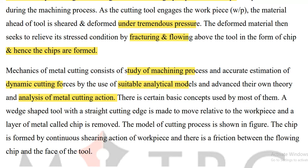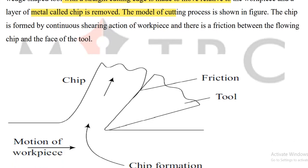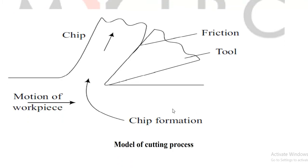A tool with a straight cutting edge is made to move relative to the workpiece, and a layer of metal called a chip is removed. The model of the cutting process is shown in a figure. The chip is formed by continuous shearing action of the workpiece, and there is friction between the flowing chip and the face of the tool.